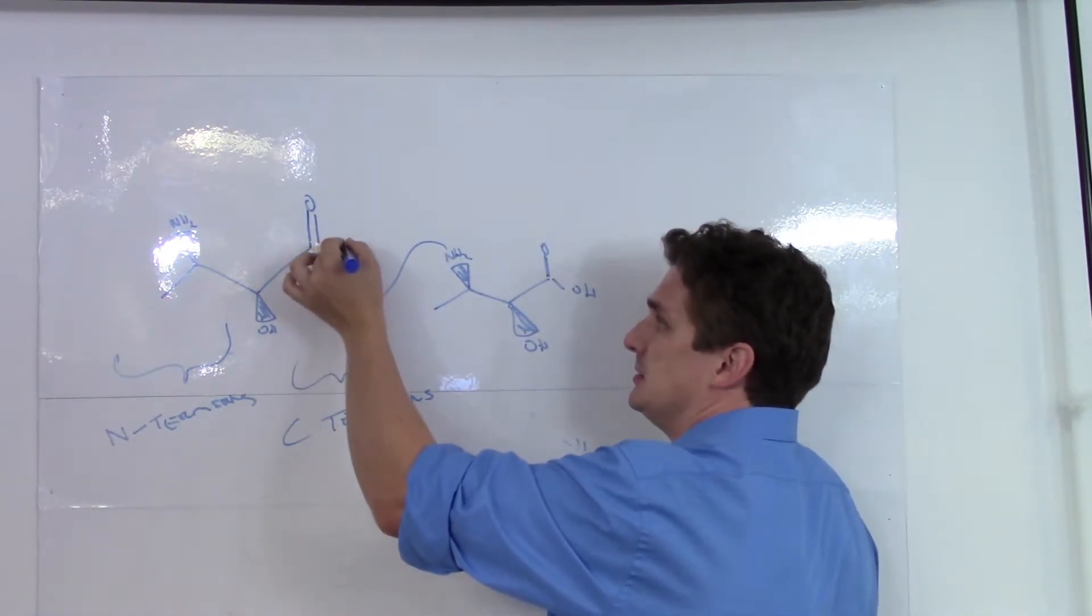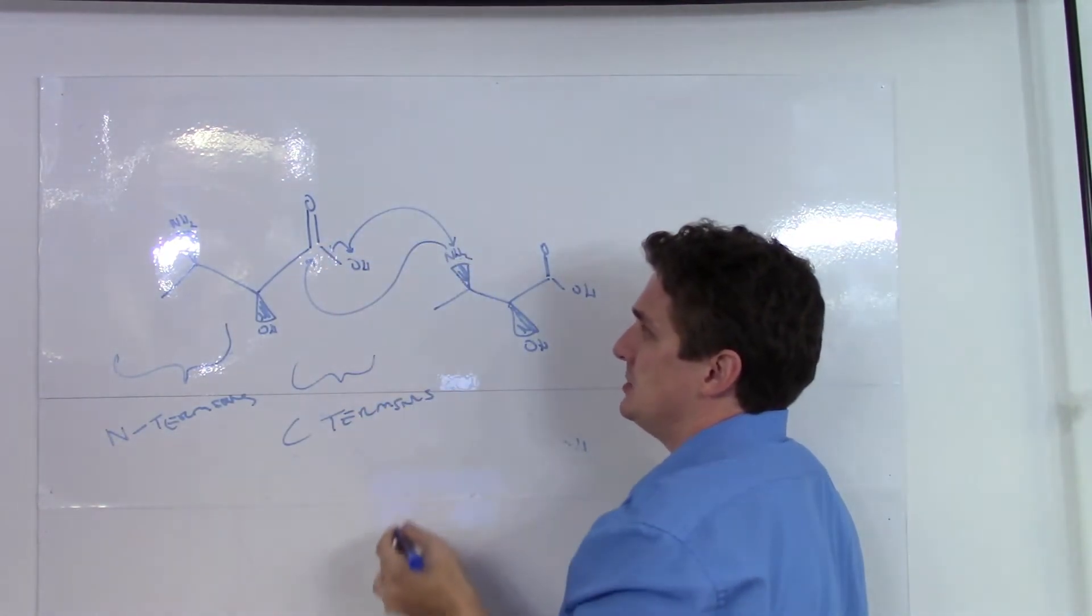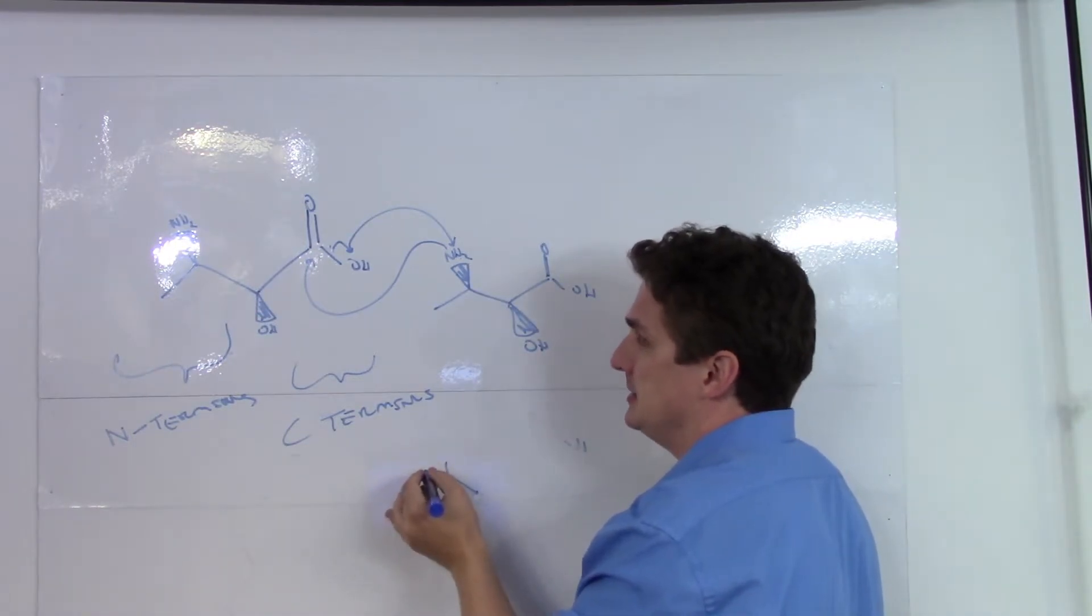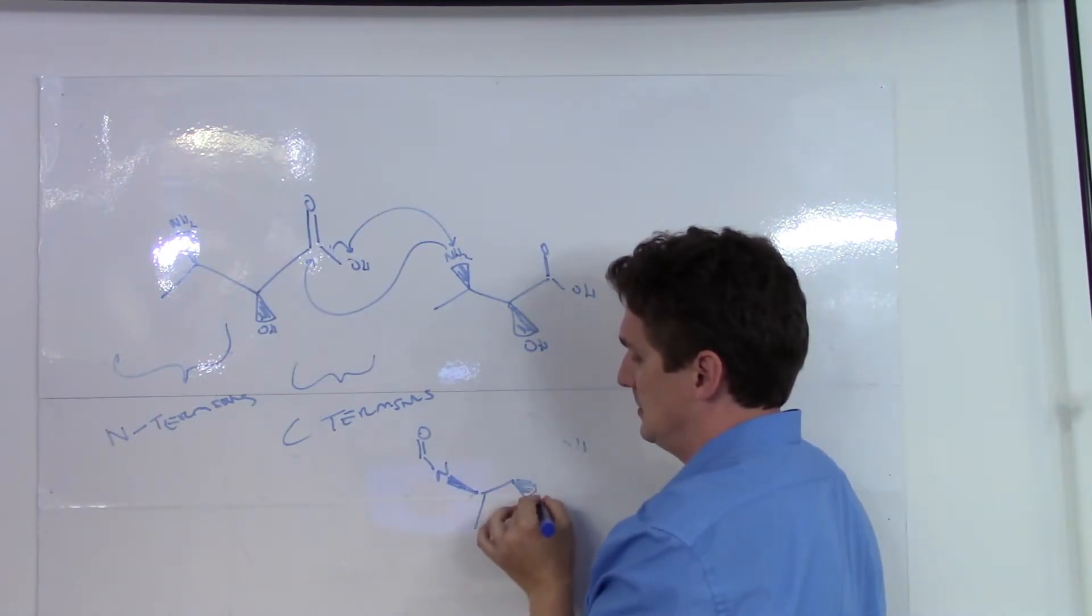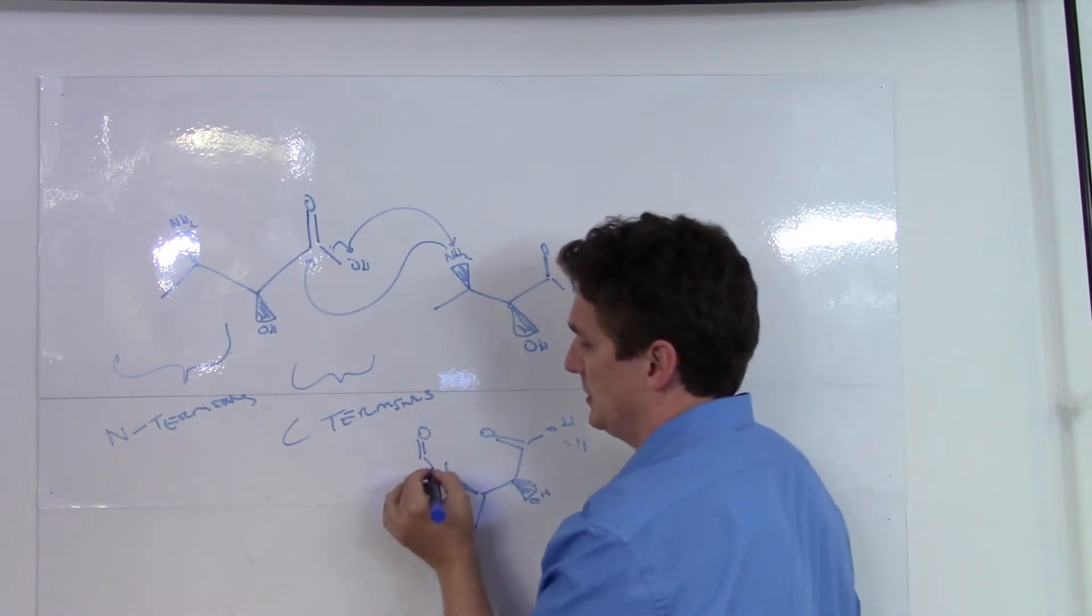This subsequently removes the OH group which deprotonates the hydrogen on the nitrogen to give us this amide and we'll try to draw it very quickly.